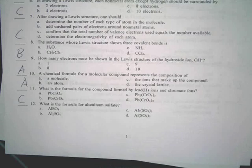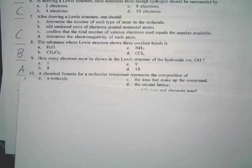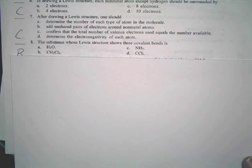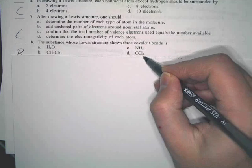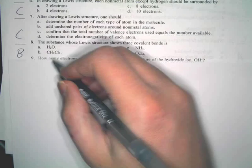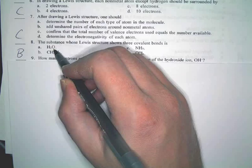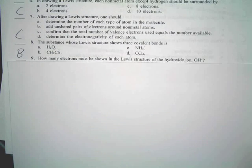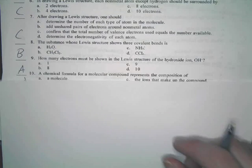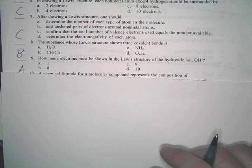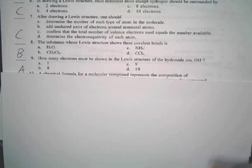The substance whose Lewis structure shows three covalent bonds is, now there's two ways you can do this. You can draw out every Lewis structure and actually count the bonds, or you can just look and say, which is the only structure that's going to form three bonds? And you look, that's going to have four bonds, right? That's going to have four bonds. That's going to have how many bonds? Two. So the only one that's even going to have three bonds is NH3.